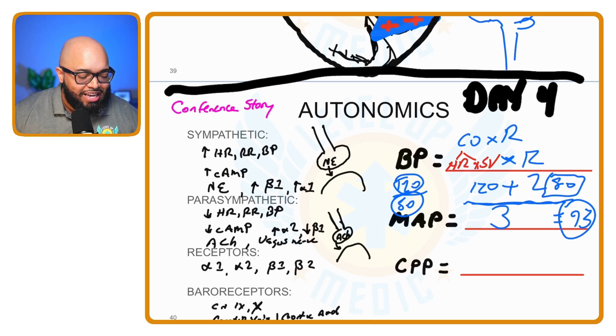Now, so MAP is as easy as 1, 2, 3, take the systolic number plus twice the diastolic number, add those together, and just divide it by just the number 3 by itself.